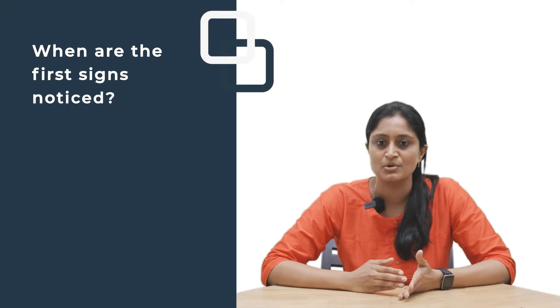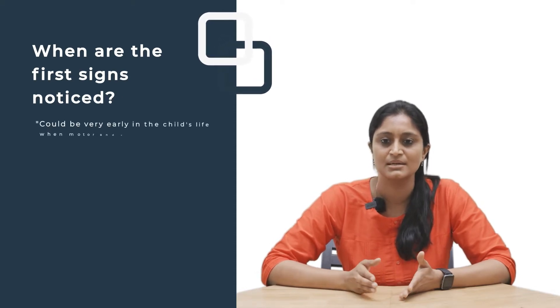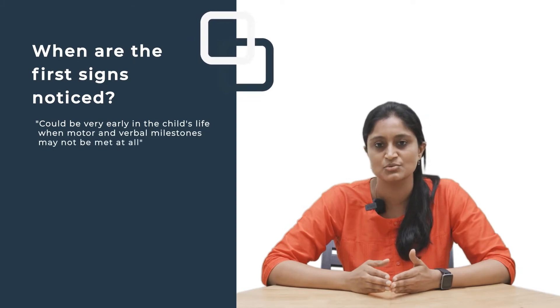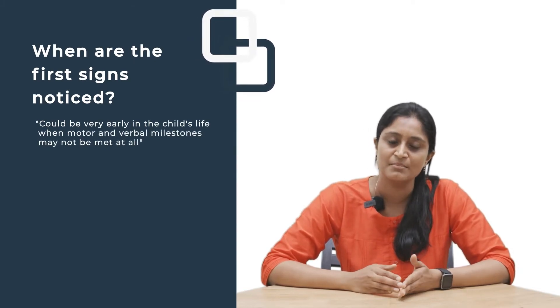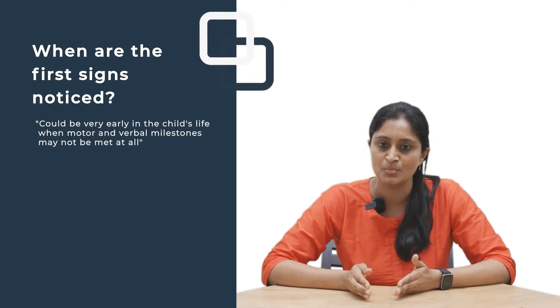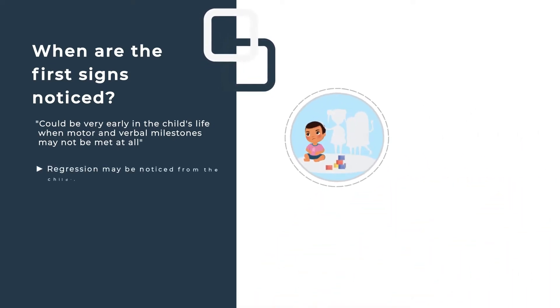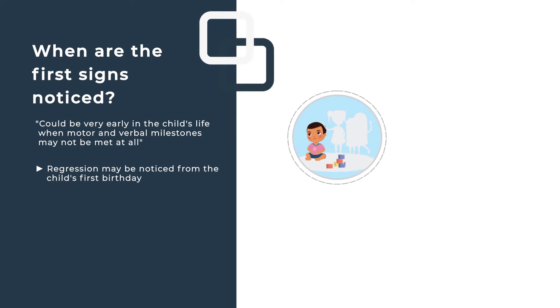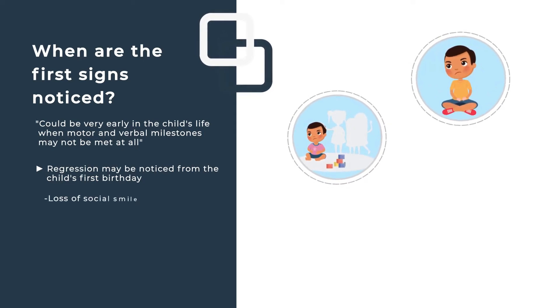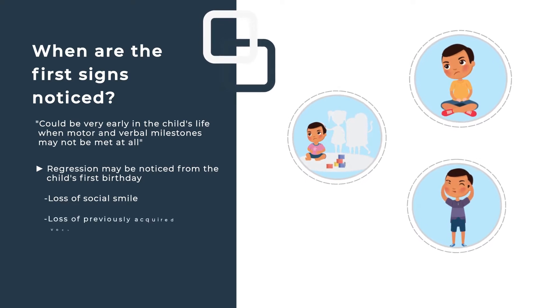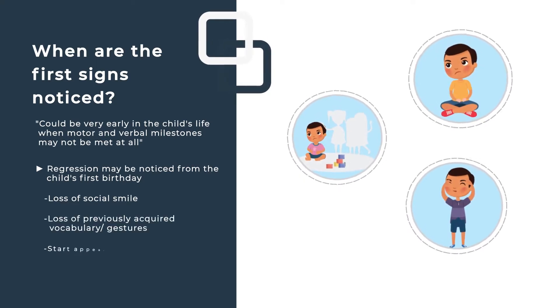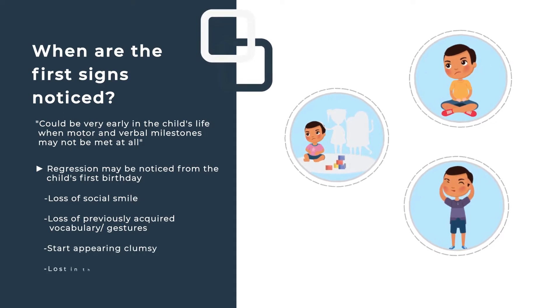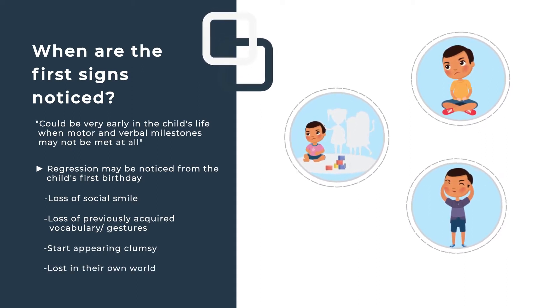These signs are usually seen during early childhood, before the age of two, and last throughout an individual's lifespan. Some parents report delays seen very early in the child's life, where motor and verbal milestones may not be met. Others report the child developing normally until around the first birthday, when a bout of ill health leads to regression — loss of social smile, words, sentences, or gestures they previously had.